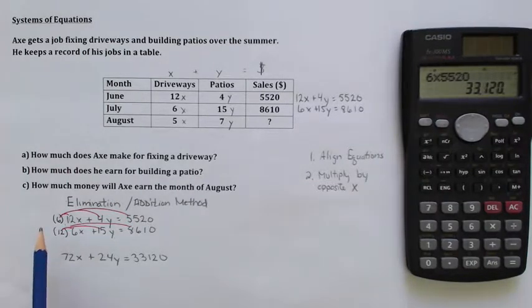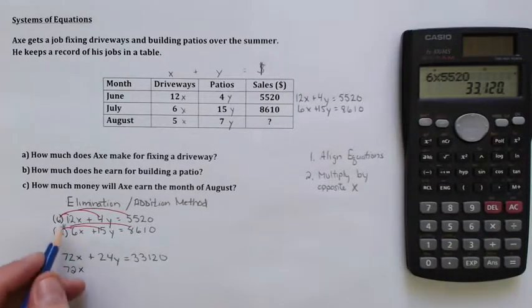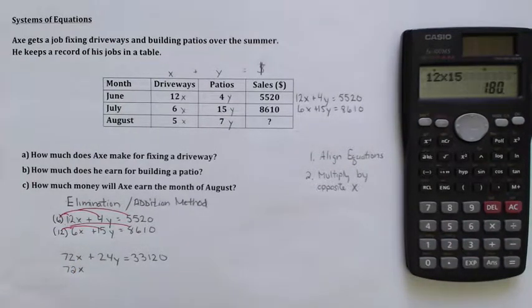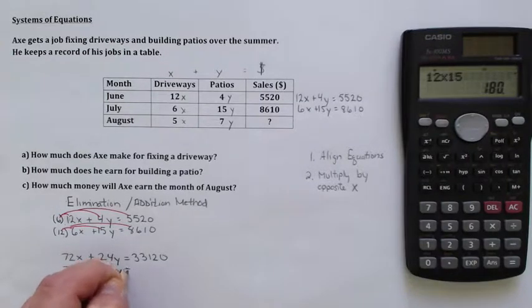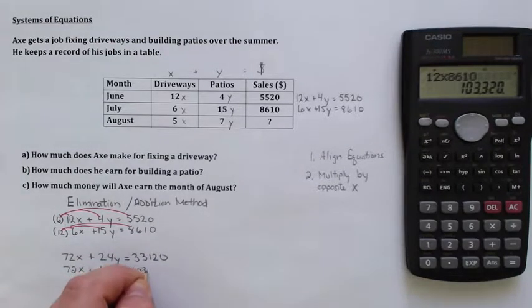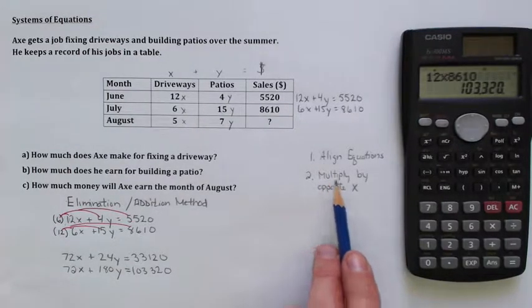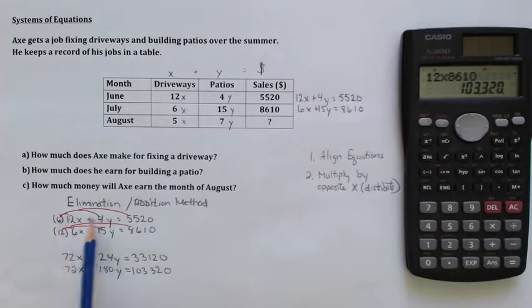Now, on the second equation, I'm multiplying by the opposite X. So this one I'm going to multiply by 12. So again, I'm going to get 72. And that's not a coincidence. That's what I'm trying to achieve. You'll see why in a second. So 72X and then 12 times 15, 180, so plus 180Y is equal to. Now I've got to go 12 times 8610. And that'll be 103,320. Now, once you've done that and you've multiplied by the opposite X and I'll put the little note in there, distribute, remember that it's got to be right across all three terms.